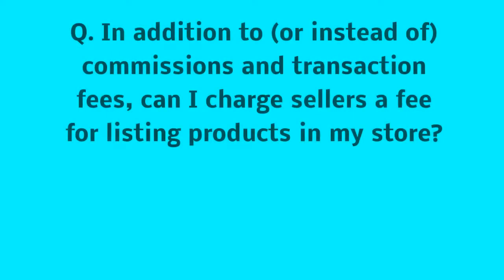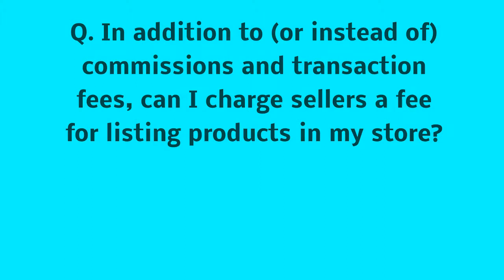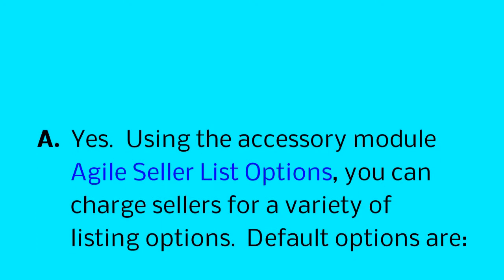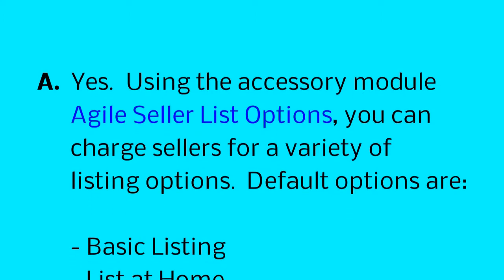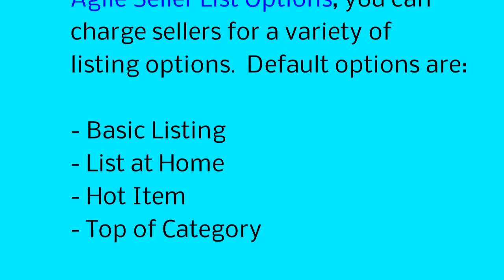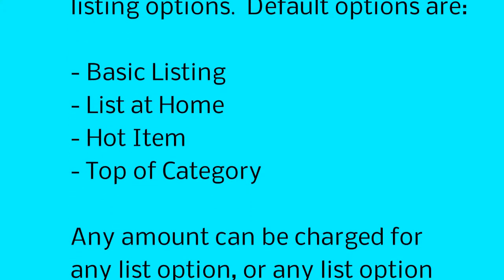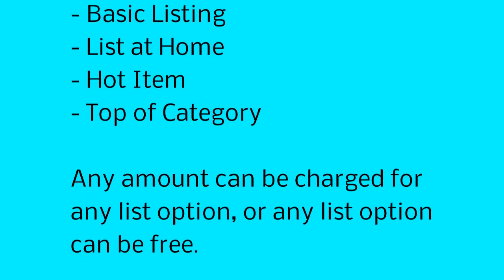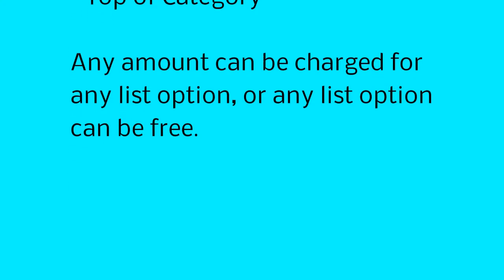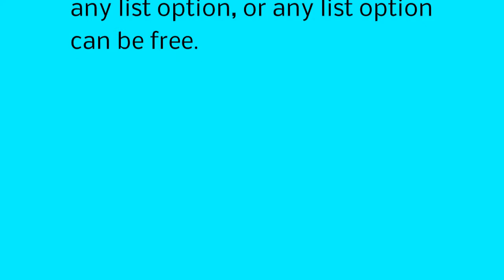In addition to or instead of commissions and transaction fees, can I charge sellers a fee for listing products in my store? Yes, using the accessory module Agile Seller List Options, you can charge sellers for a variety of listing options. Default options are Basic Listing, List at Home, Hot Item, and Top of Category. Any amount can be charged for any list option, or any list option can be free.